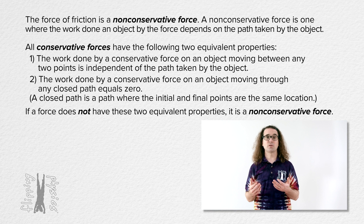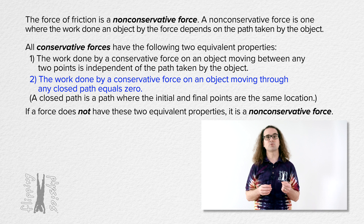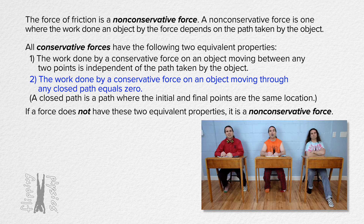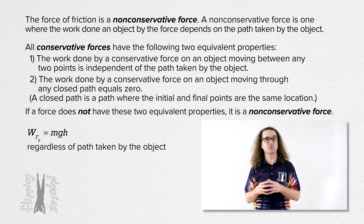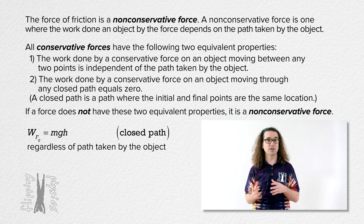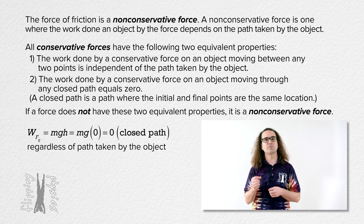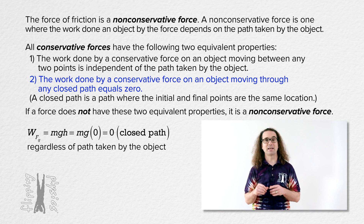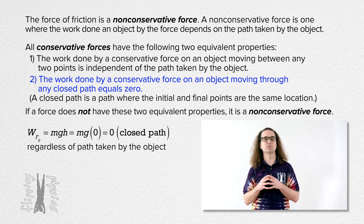We have already shown the first equivalent property to be true. Let's look at work done on an object as it moves through a closed path to investigate the second property. We have already shown that the work done on an object by the force of gravity equals mass times acceleration due to gravity times height, regardless of the path taken. For a closed path, the initial and final heights will be the same, and the work done on the object by the force of gravity will equal zero. That shows that the force of gravity has the second equivalent property necessary to be a conservative force.